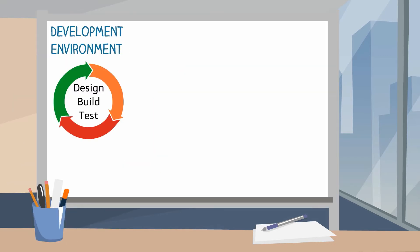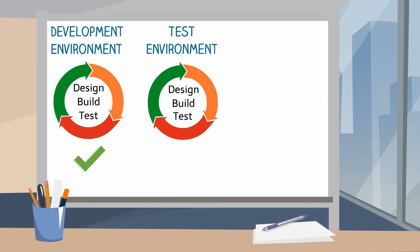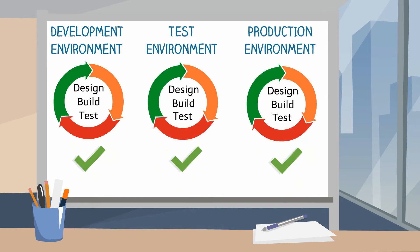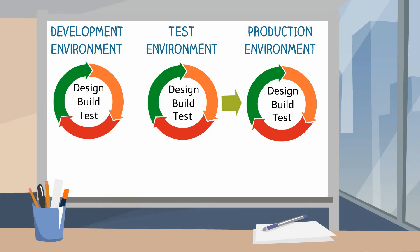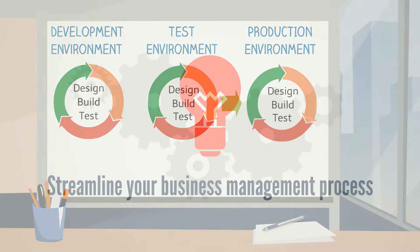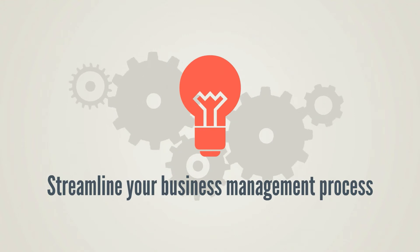Each piece of code is deployed from the initial development environment, to the test environment, to be finally promoted into production. Because environments are different, how can I deploy my code from one environment to another with as little manual intervention as possible?